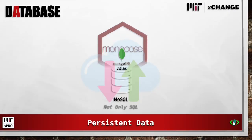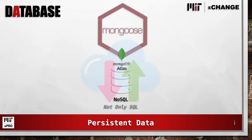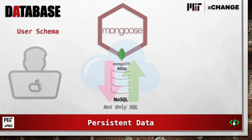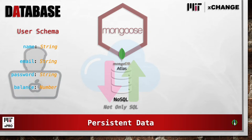Mongoose is then used to define our user schema, which consists of name, email, password, balance, and timestamps, all of which are strings except the balance,